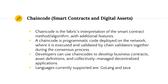Chain code is the smart contracts for the Hyperledger Fabric — it's the smart contract method that the Fabric uses. It's basically a programmatic code deployed on the network where it's executed and validated by chain validators during the consensus process. Developers can use chain codes to build business contracts, assets, and collectively manage their decentralized applications. Currently, chain code languages supported are Golang and Java.